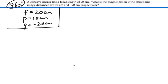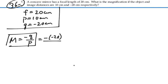We're just looking for magnification. That should equal negative Q over P. In this case that would be negative negative 20 over 10, which will give us a magnification of 2.